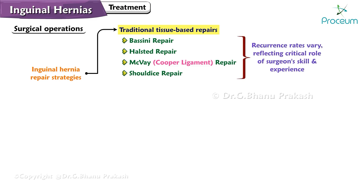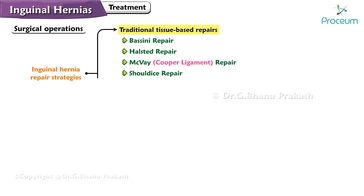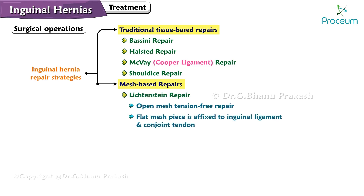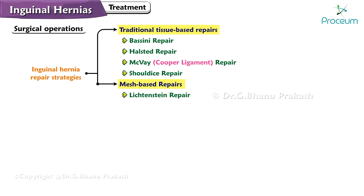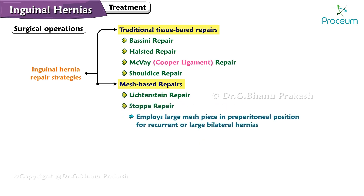Recurrence rates for these traditional repairs vary, reflecting the critical role of the surgeon's skill and experience. Mesh-based repairs include the Lichtenstein repair, an open mesh tension-free repair where a flat mesh piece is affixed to the inguinal ligament and the conjoined tendon, facilitating early activity resumption and offering low recurrence. The Stoppa repair employs a large mesh piece in a preperitoneal position for recurrent or large bilateral hernias, requiring more extensive dissection.